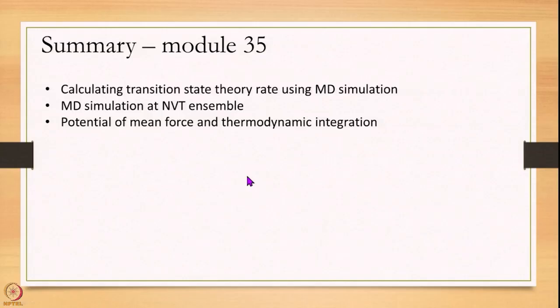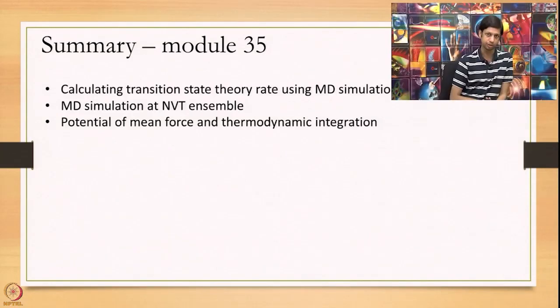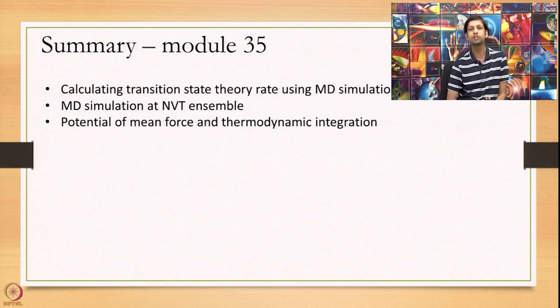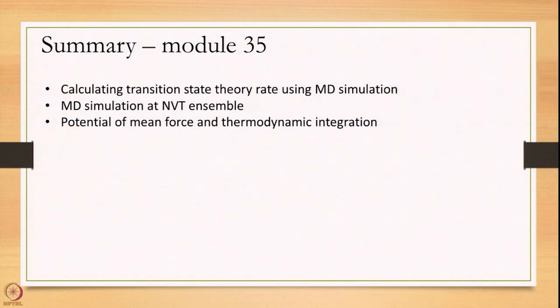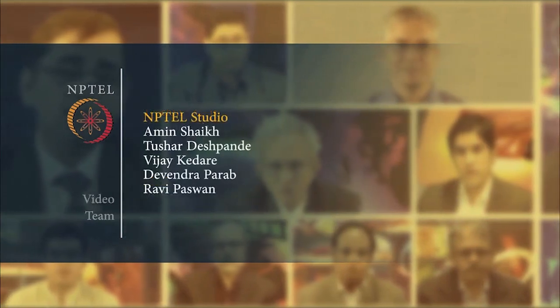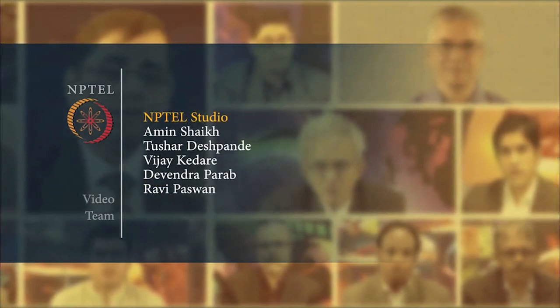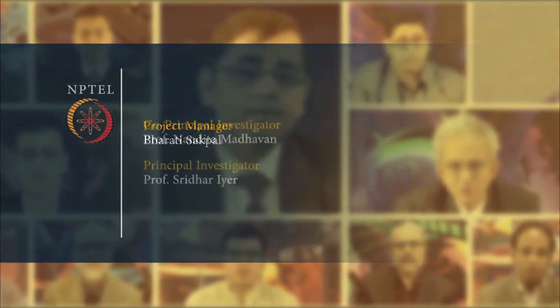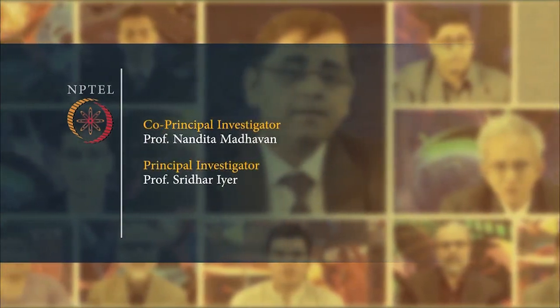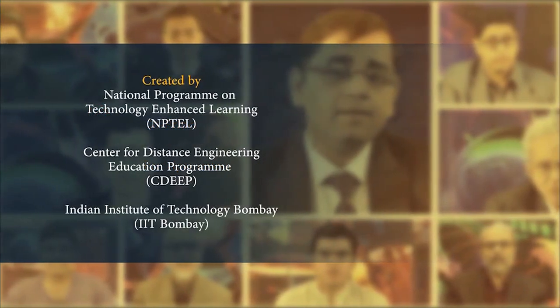So this was a quick summary of how we can use an MD simulation to calculate a Transition State Theory rate. This approach is useful when partition functions are not easily available — when you cannot separate rotation and vibration, or when the vibrations are anharmonic. In those cases, you use this kind of potential of mean force calculation. Thank you very much.